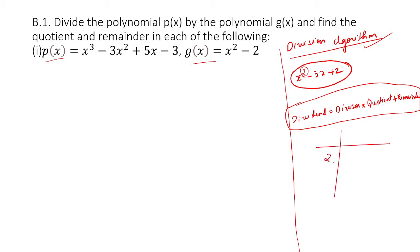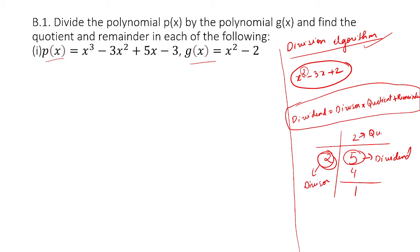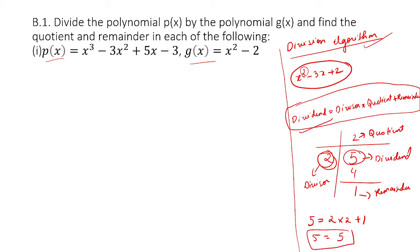For example, suppose we have 5 and 2. This is the dividend, this is the divisor, this is the quotient, and this is the remainder. The dividend equals divisor into quotient plus remainder. What is the dividend? 5. What is the divisor? 2. What is the quotient? 2. And the remainder is 1. So 2 into 2 is 4, and 4 plus 1 is 5. This division algorithm tells us that dividend equals divisor into quotient plus remainder.